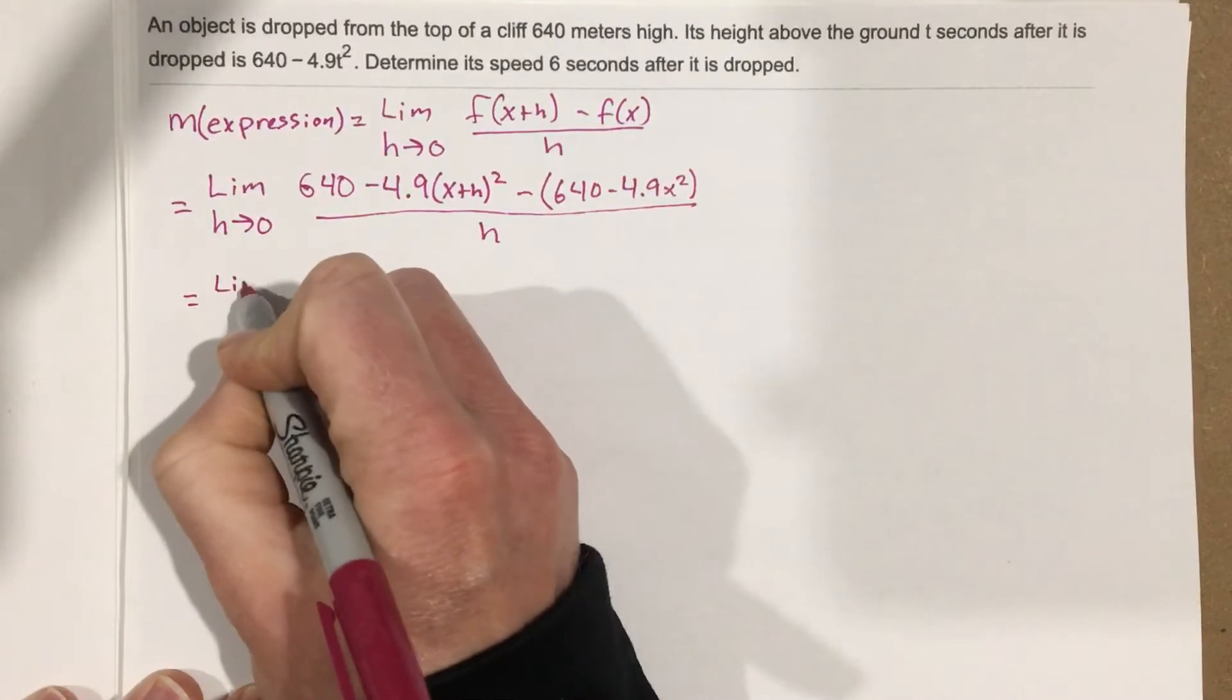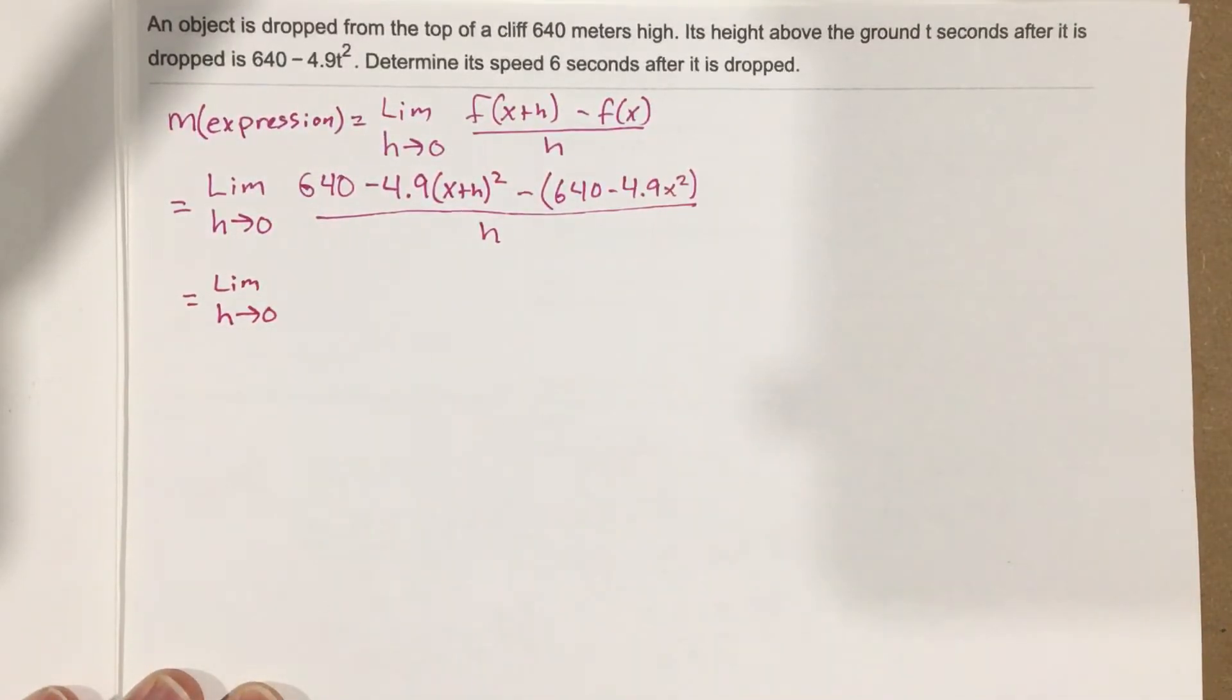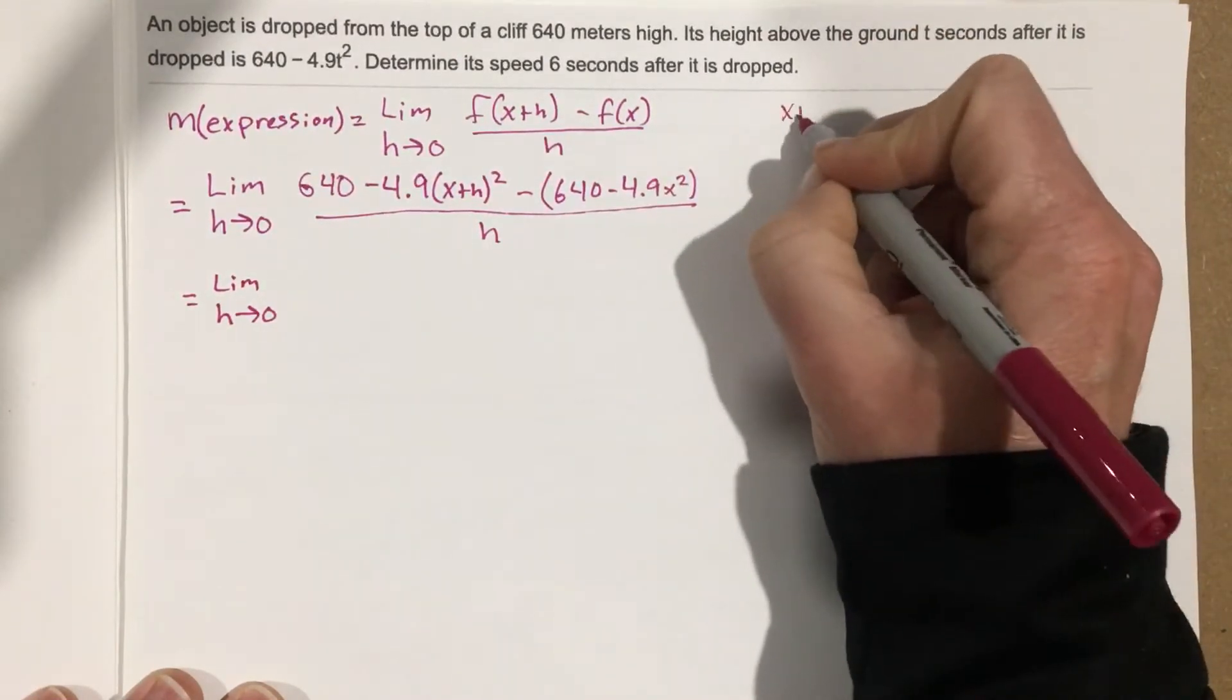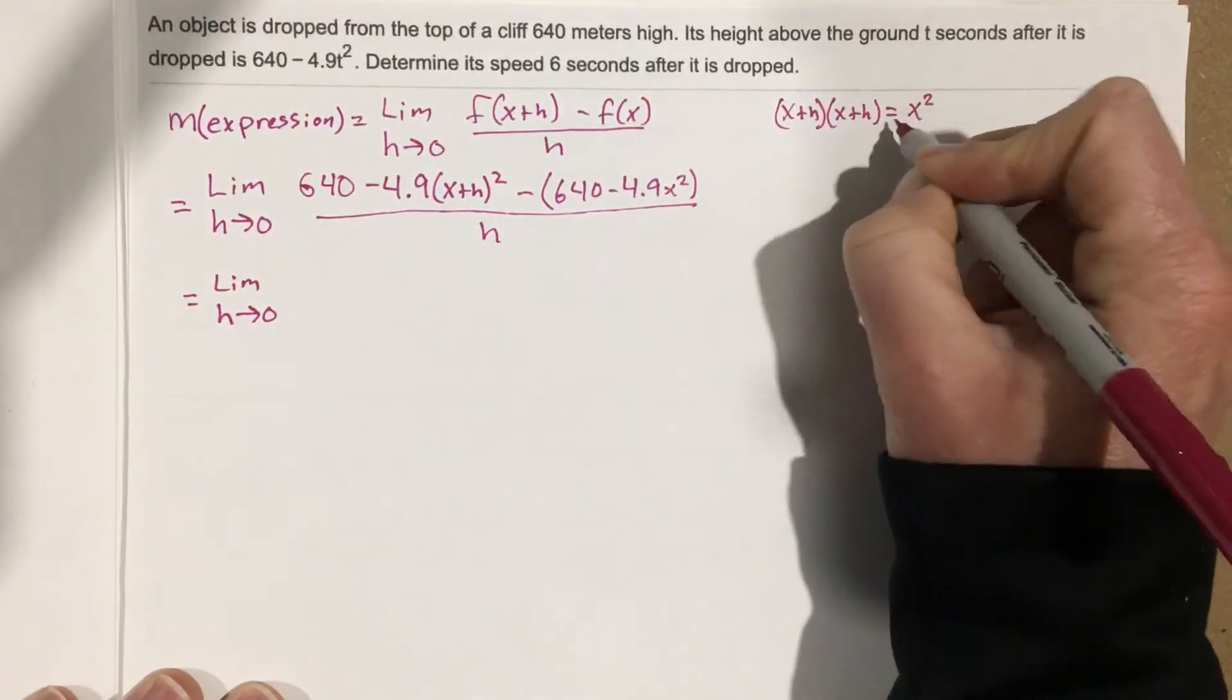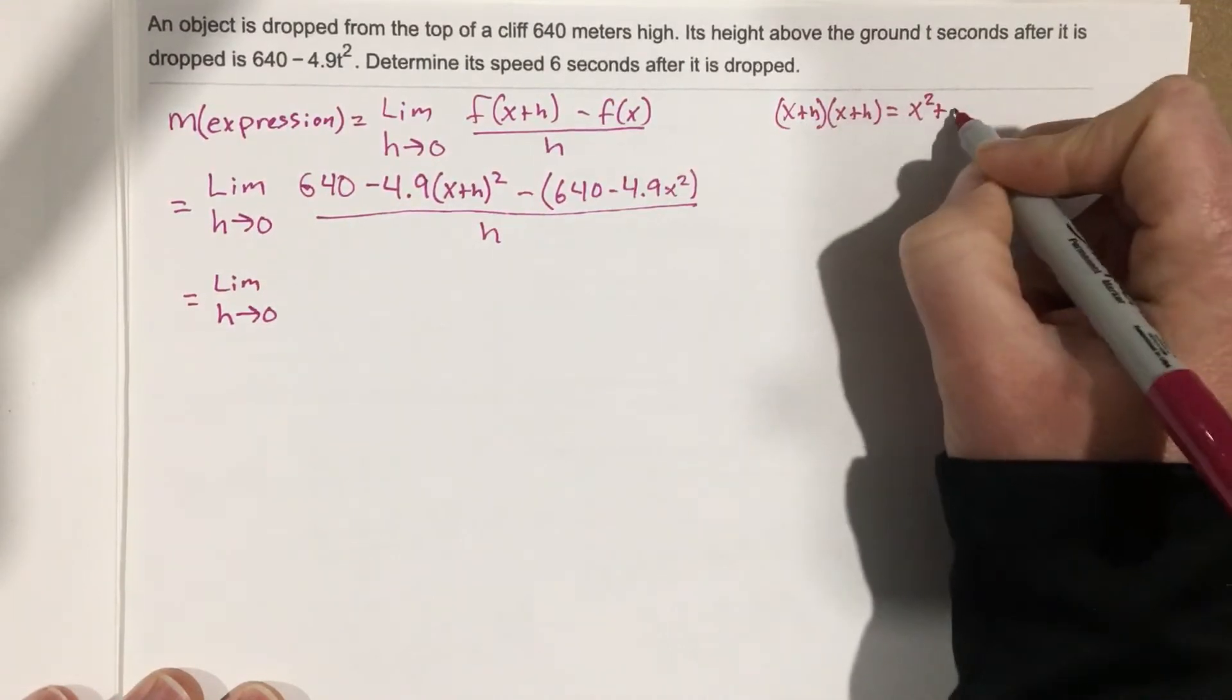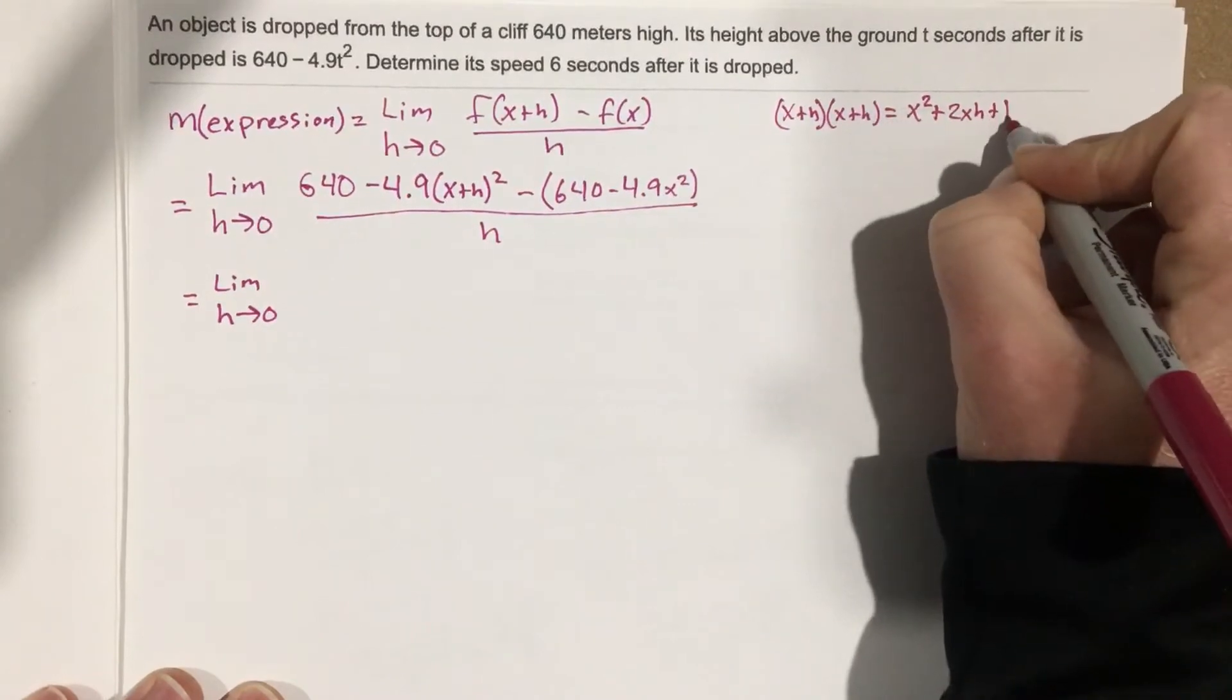This is the limit as h approaches zero. We need to figure out what is x plus h squared. So x plus h squared is x plus h times x plus h, which gives you x squared plus x times h and h times x, so that's 2xh, plus h times h which is h squared.